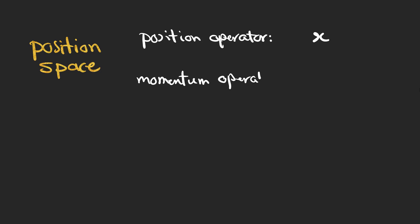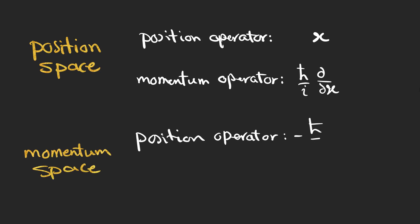When we are in position space the momentum operator is h bar over i d dx but when we are in momentum space the position operator is minus h bar over i d dp. We can use these two spaces to solve different problems in quantum physics.